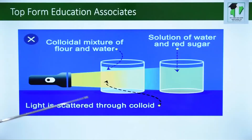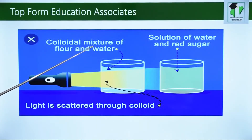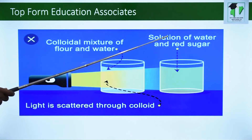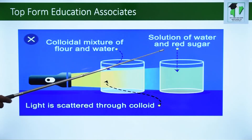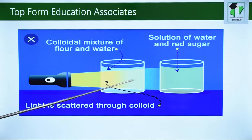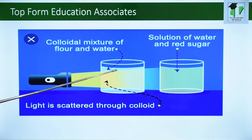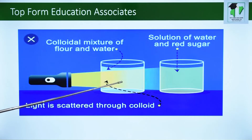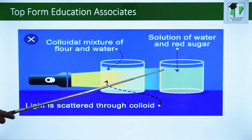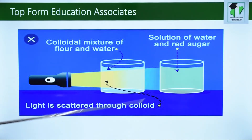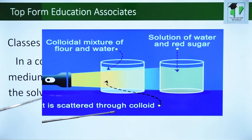In this diagram, you can see two solutions. One is a colloidal mixture of flour and water. The other one is a solution of water and red sugar. If you flash a light through this, you can see the light is dispersed in the colloidal mixture, whereas in the sugar solution, the light just passes through straight.